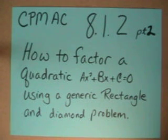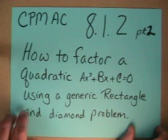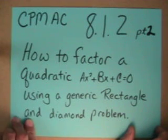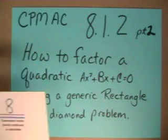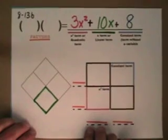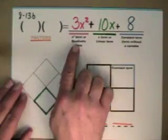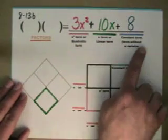Welcome to 8.1.2 Part 2. We're going to continue. This is a good video to go back to if you just need the overview of how to do this process. In Part 1 we reviewed how to do a generic rectangle, a factor using a generic rectangle. We also talked about how to use a diamond problem. This is one of the first problems that we did in this section, 8-13b, where they said we want you to find the factors of 3x² + 10x + 8.